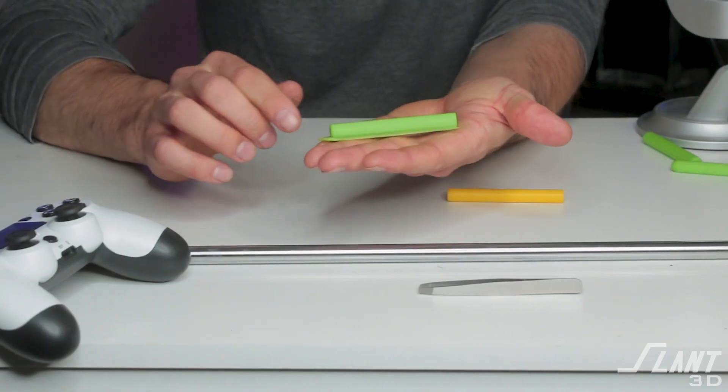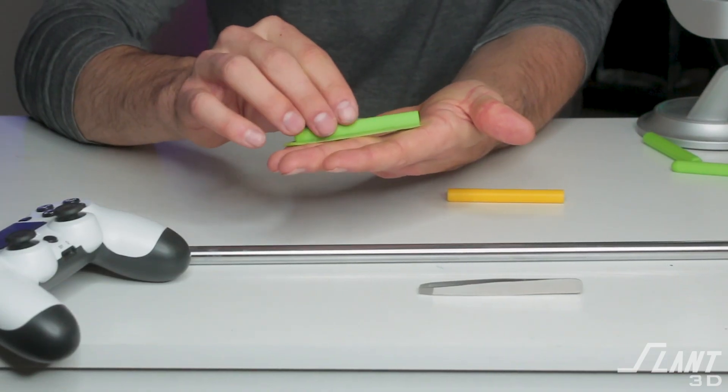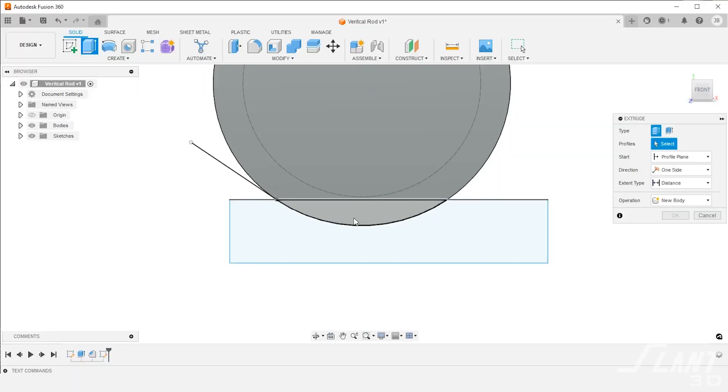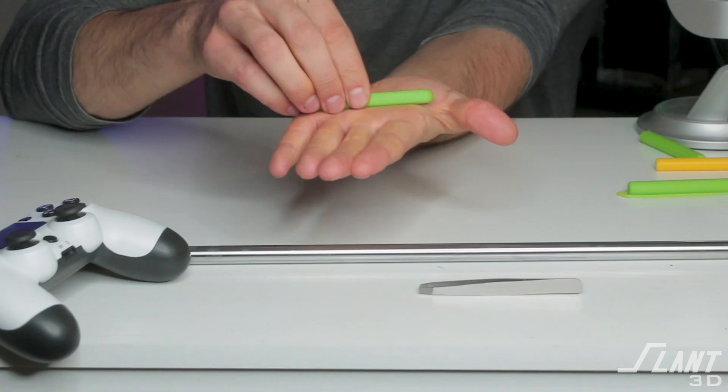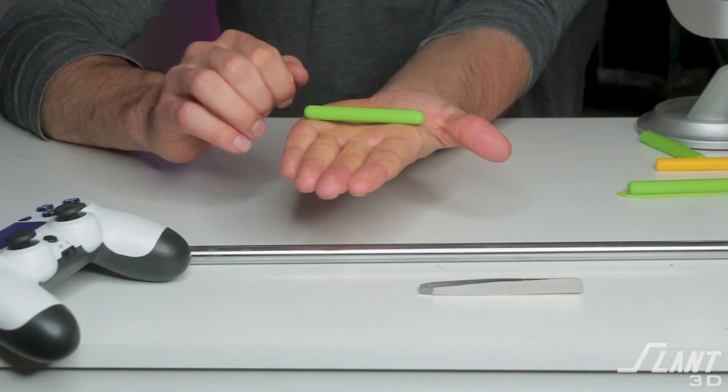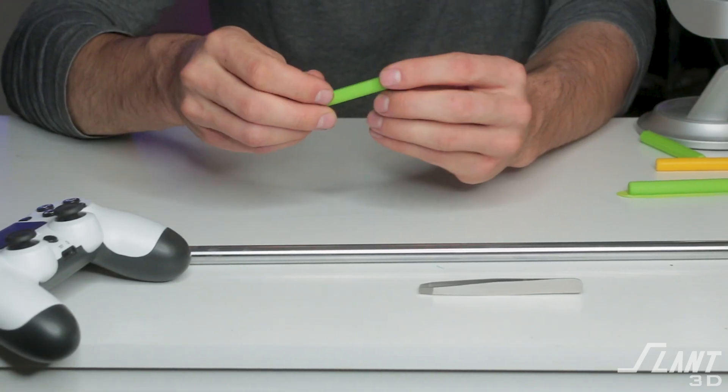You want to ensure that it always has a decent amount of contact. In order to do that what you could do is just take the rod and then flatten a single side of it just like so. This way it has a flat surface to sit on the bed and can reliably be printed.